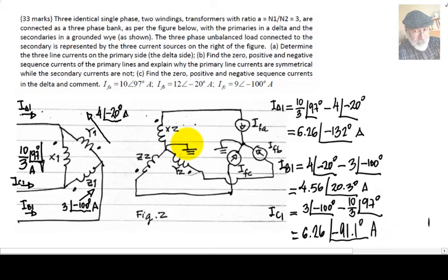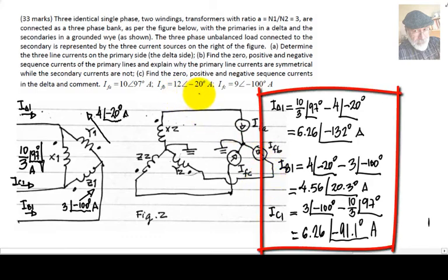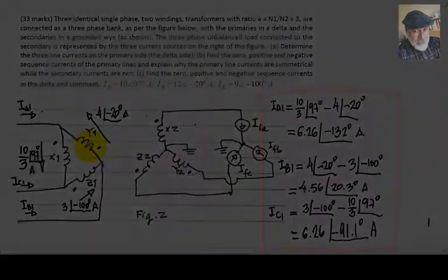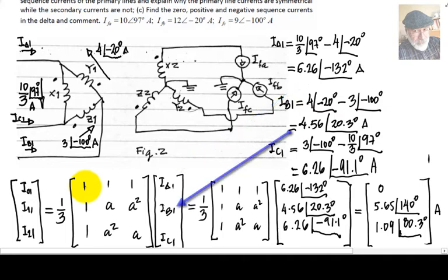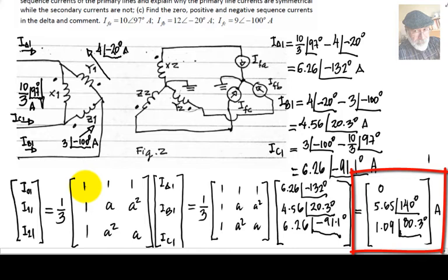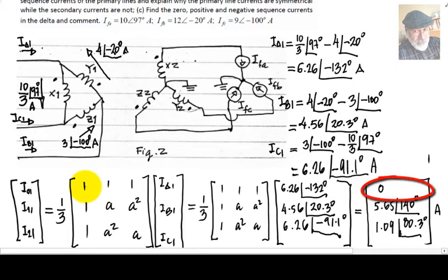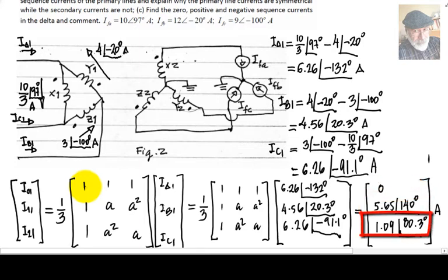That concludes Part A. For Part B, we find the zero, positive, and negative sequence currents of the primary lines by converting these three currents to the sequence domain. We apply the usual transformation to the three values obtained — 626 at negative 132 degrees, 456 at 20.3 degrees, and 626 at negative 91.1 degrees — to obtain the zero sequence, the positive sequence, and the negative sequence of the primary. The zero sequence is zero; there are no zero-sequence amps in the primary lines. There is positive sequence and there is negative sequence. That responds to Part B.